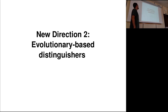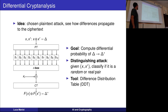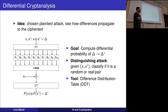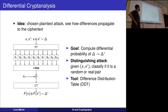The second idea is what I call evolutionary-based distinguishers. This again concerns symmetric cryptography and the direction of using artificial intelligence for it, but instead of using AI for designing primitives, here we are using it for cryptanalysis — for doing attacks. We saw something about side channel analysis in Stefan's lecture, where deep learning has become the gold standard in academia for carrying out side channel attacks. But we didn't see anything about doing mathematical cryptanalysis of a cipher.